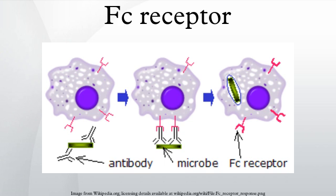FcαRI is composed of two extracellular immunoglobulin-like domains and is a member of both the immunoglobulin superfamily and the multi-chain immune recognition receptor family. It signals by associating with two FcγR signaling chains. Another receptor can also bind IgA, although it has higher affinity for IgM. This receptor is called the FC-alpha-mu receptor and is a type I transmembrane protein with one Ig-like domain in its extracellular portion, making it also a member of the immunoglobulin superfamily.